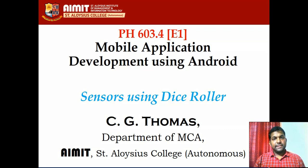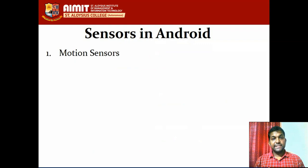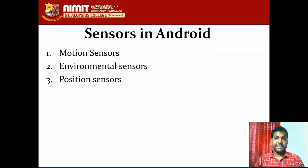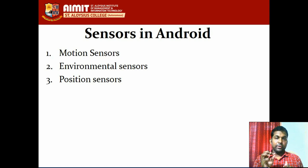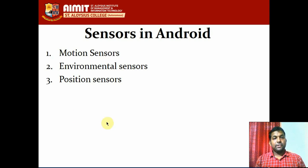Welcome back. In this program, we are going to see the idea of sensors in Android. There are three different types of sensors in Android: motion sensors, environmental sensors, and position sensors. But in this video, I am just going to do the first part of the program, which is a dice program. I am going to use the motion sensor — specifically the accelerometer.